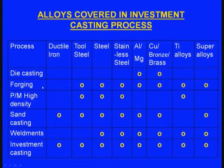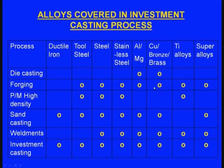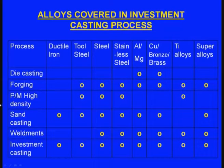Forging is another important manufacturing process: ductile iron cannot be forged. Tool steel, steel, stainless steel, aluminum and magnesium alloys, copper, bronze and brass, titanium alloys, and super alloys can be forged — but ductile iron cannot be forged.